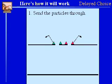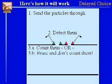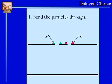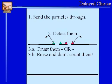Here's how it's going to work. We're going to throw particles at the double slit. We are going to detect them at the slit. We are going to collect the information, and then after a while we're either going to count them or we're going to erase the information and not count them. Then we're going to look at the back wall. We throw the particles at the double slit, detect them, then either look at that information so we will know which slit they went through, or erase the information so that we will not know which slit they went through. And then we will look at the back wall.